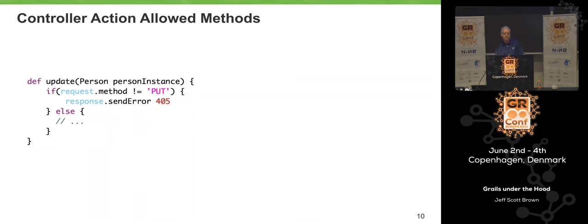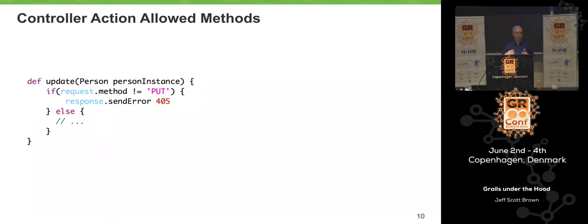That's runtime metaprogramming — all happening at runtime, no compiler aspect. Let's jump into the context of a Grails application. We've got an 'update' method inside a Grails controller. It's a controller action that accepts a Person object as an argument, and the first thing it's going to do is update the database to reflect whatever values are in that Person instance.